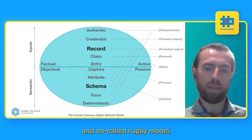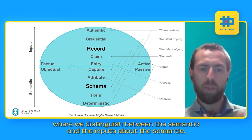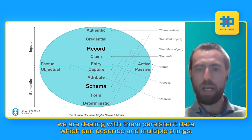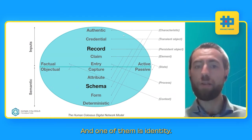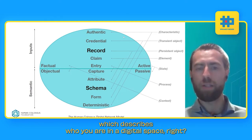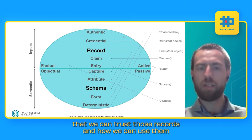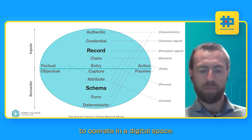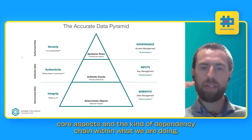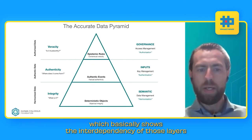We use the so-called rugby model, which represents a digital network model where we distinguish between the semantic and the inputs. You heard about semantics last week; today is about the inputs, where we deal with records and persistent data that can describe multiple things — one of them being identity. Identity is just a set of data points that describes who you are in the digital space. We need to discuss how we can get to the position where we can trust those records and use them to operate in a digital space. One of the core aspects within the Dynamic Data Economy is something we call the accurate data pyramid.